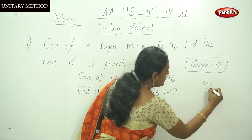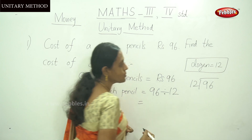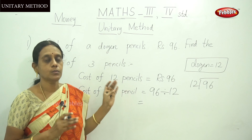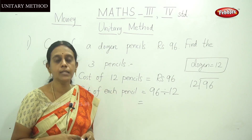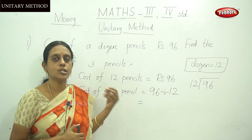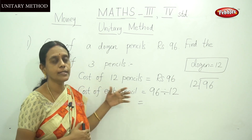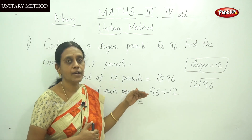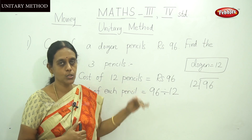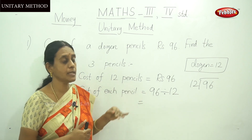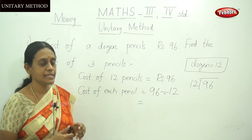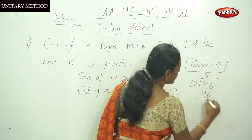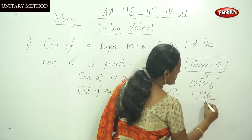Let me divide 96 by 12. Say the 12 times table, children — you should memorize the multiplication table so the answers are at your fingertips. That's the only way you can do multiplication and division sums easily. Now, 8 times 12 is 96, so the quotient is 8.